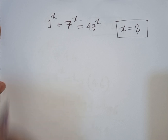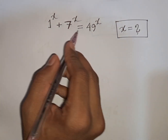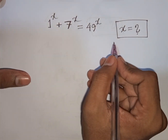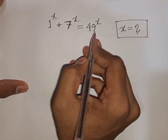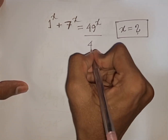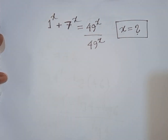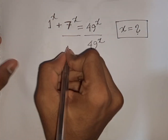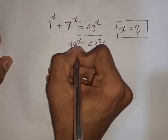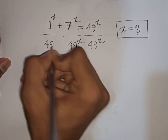How to solve 1^x plus 7^x is equal to 49^x. Find the value of x. So at first we divide both sides by 49^x, divided by 49^x, divided by 49^x.